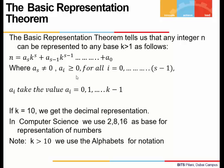In our day-to-day life we use base 10, which means k equals 10, and any integer can be represented to base 10. In computer science we use base 2, 8, and 16, and whenever we take a base greater than 10 we use alphabets for notation.